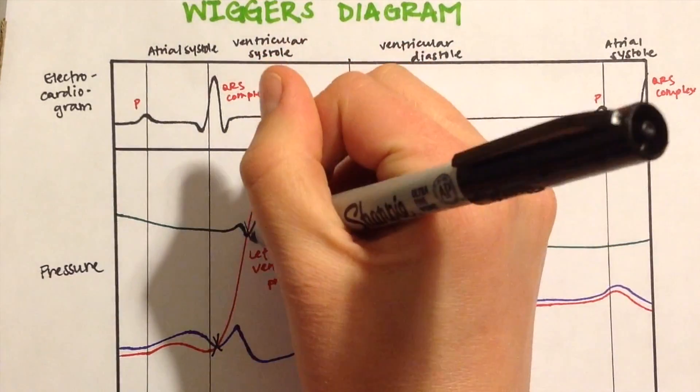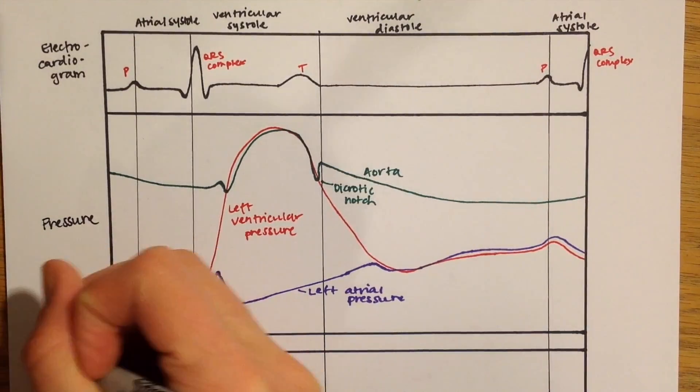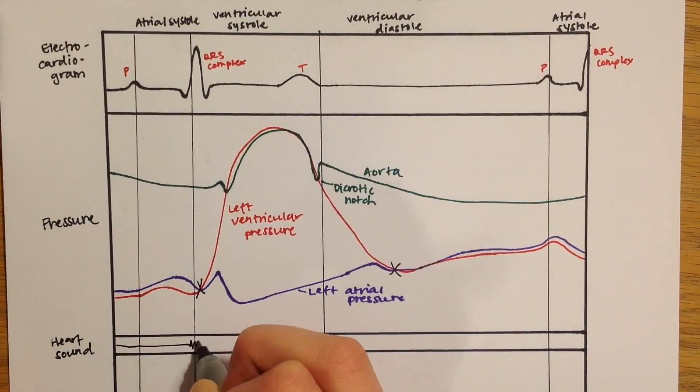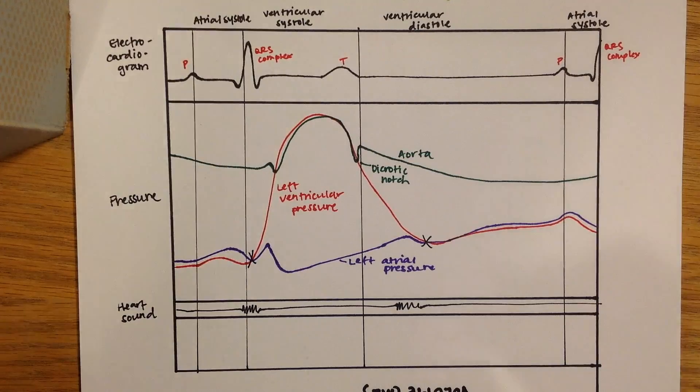As I said earlier, these points at which the aortic and the ventricular pressures are the same create the lub-dub sounds of the heart, so I'll show these sounds below. Okay I drew those terribly, but hopefully you get the idea.